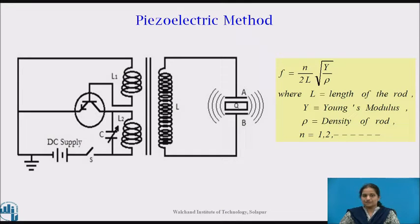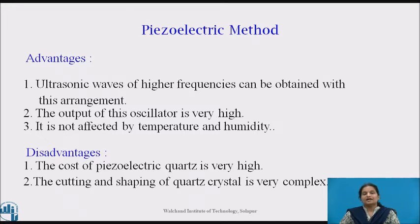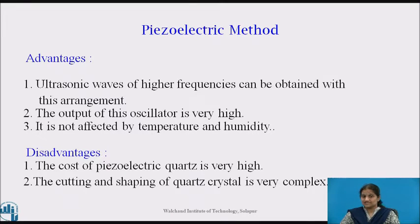This vibration produces a sound wave of frequency equal to the frequency of the electric oscillations, and in this way ultrasonic waves can be produced. The natural frequency of the crystal is given by f = n/(2l) × √(Y/ρ). When the frequency of the electrical oscillations equals the natural frequency of the crystal, resonance is achieved and sound waves of maximum amplitude are produced. Advantages of the piezoelectric method: the output is very high, it is not affected by temperature and humidity, and ultrasonic waves of higher frequencies can be obtained. The disadvantages are that the cost of piezoelectric quartz is very high and cutting and shaping of the quartz crystal is also very complex.